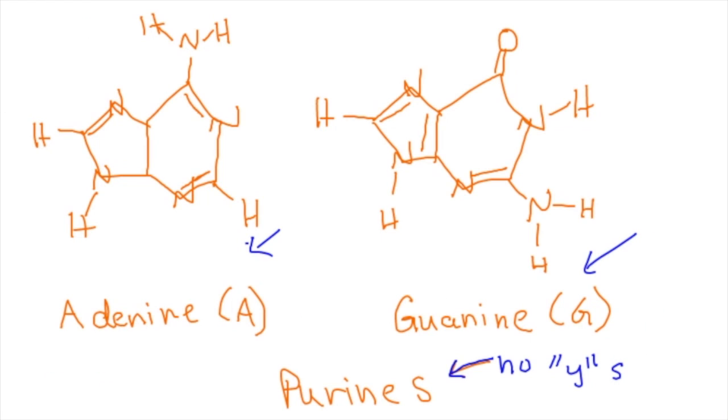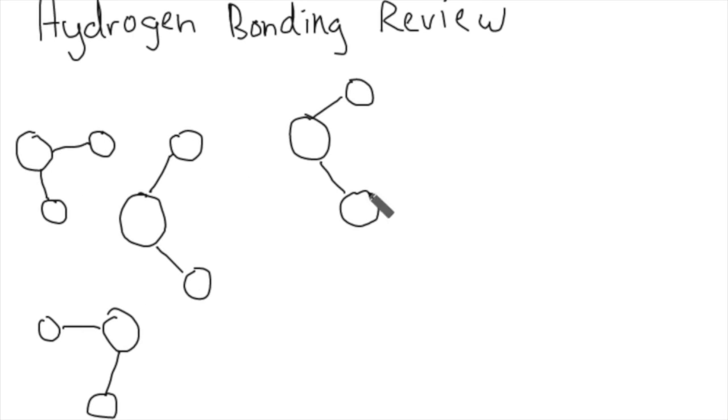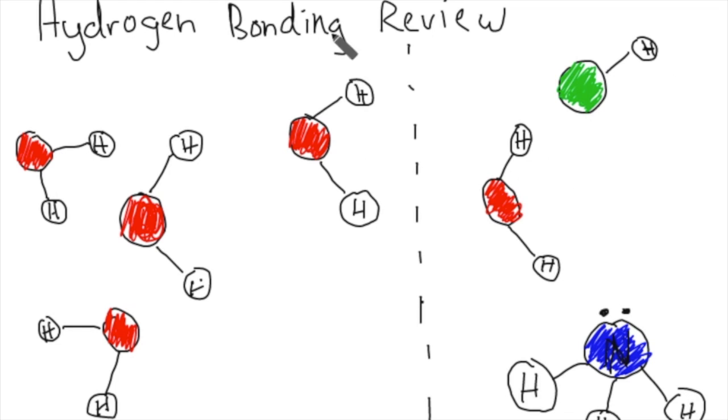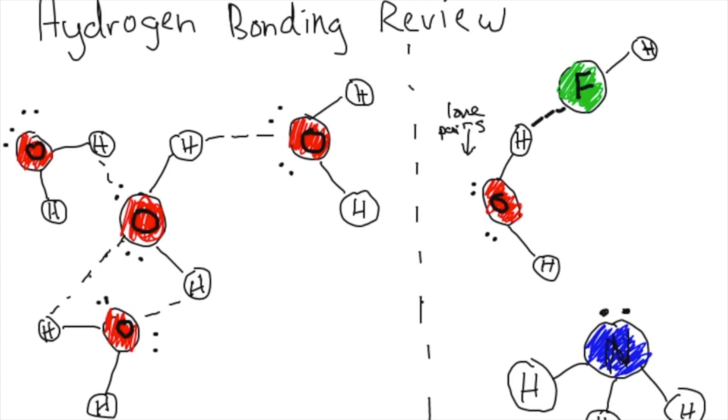So the last subject we're going to be touching on here is going to be how bases pair, but to do that, we need to have a mini hydrogen bonding review. Here I'm showing you the molecules that can participate in hydrogen bonding. On the left, we have water, which is a classic example of hydrogen bonding. And then on the right, we have two other molecules, fluoride and nitrogen. The dots around the O and the N are the lone pairs of electrons that belong to those atoms. So hydrogen bonding is an interaction that happens between hydrogen and either fluorine, nitrogen, or oxygen. These are bonds that aren't covalent, but they are very strong when there's lots of hydrogen bonding happening at once.